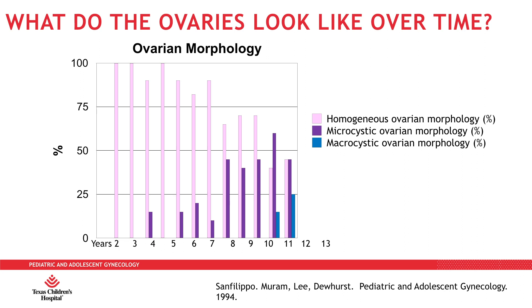Here is a depiction looking at the ovaries and their morphology over time, from the neonatal period through early adolescence. In the beginning, the appearance of the ovary is very homogeneous — the architecture looks very similar throughout the ovary on ultrasound. As you age, new microcystic components begin to occur even in the prepubertal years. Once puberty happens, there are macrocystic changes, meaning the ovary will sometimes have characteristics of active follicles, and there is a mixture of microcystic, macrocystic, and homogeneous architecture components.